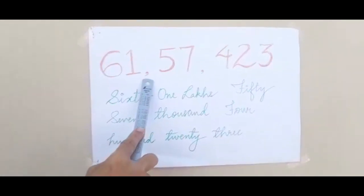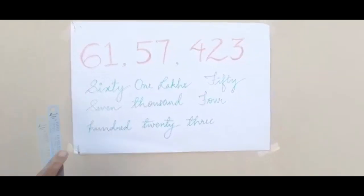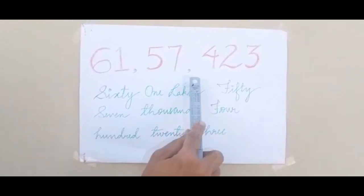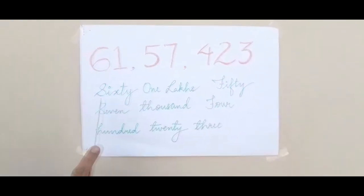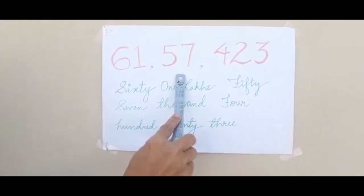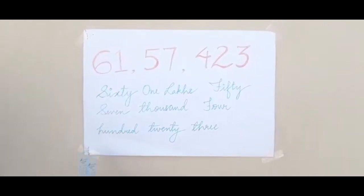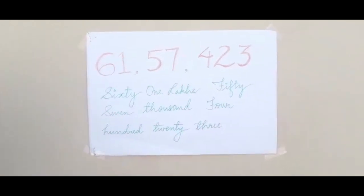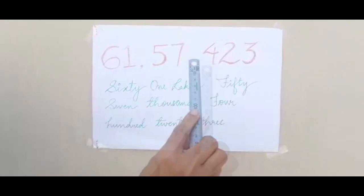Now let's see how you can read this number. You can see the commas are placed here. You know that part of the number comes under the lakhs period, this part under the thousands period, and this part under the ones period. So let's read it out: sixty-one lakh, fifty-seven thousand, four hundred twenty-three. This is the way to read numbers using the Indian number system.